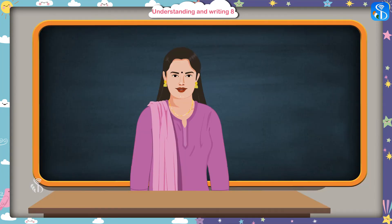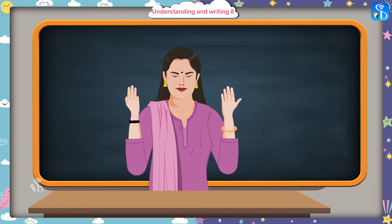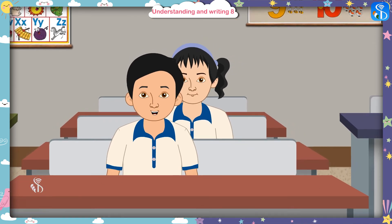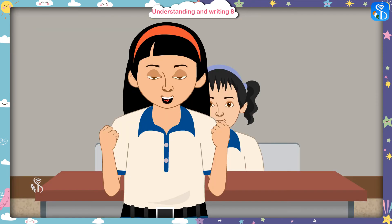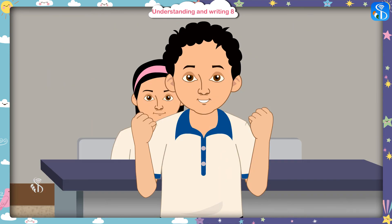Now I will teach you how to write the number 8. But before that, repeat after me: 7 and 1 make 8. Now show me 8 fingers please. 1, 2, 3, 4, 5, 6, 7, 8. Very good.